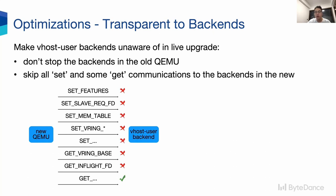After inheriting the FDs, we can make VM Live Upgrade transparent to the vhost user backend. First, don't stop the backend in the old QEMU — just keep it running. Second, skip all SET communications such as set memory table, set vring number, address, set features, and so on. And also skip some GET communications, meaning get vring base and get in-flight FD. We skip these communications to the backend in the new QEMU. By this, the backend is unaware of the Live Upgrade.